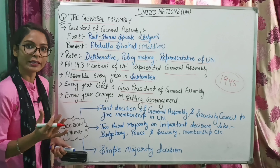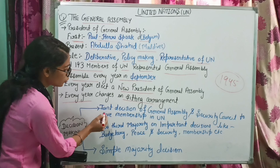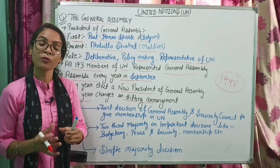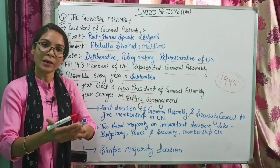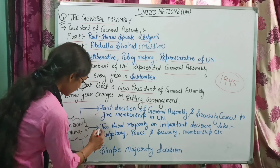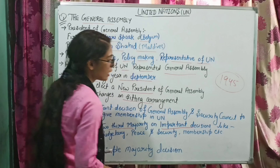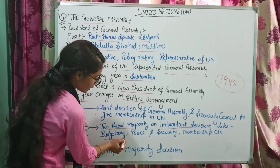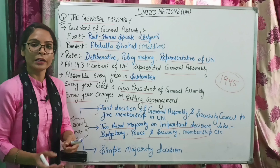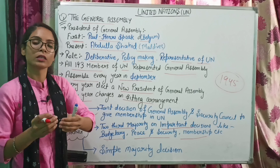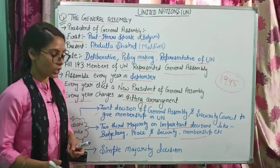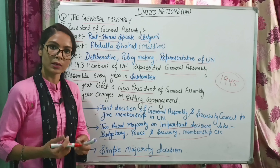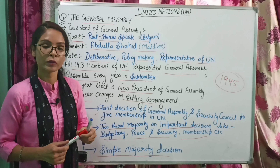General Assembly में Decision Making कैसे होता है: पहला — Joint Decision of General Assembly and Security Council, अगर किसी country या state को membership देनी हो United Nations में. दूसरा — Two-Third Majority on Important Decisions, जैसे budgetary related, peace and security related matters, या अगर Security Council और General Assembly के बीच mutual understanding नहीं हो पाती. तीसरा — Simple Majority Decision: simply vote किया और majority के आधार पर decision ले लिया.